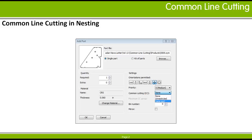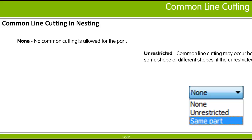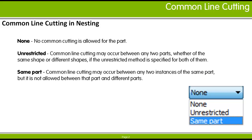The control will be set by default if the part's Common Cutting attribute is already set. For each part, the following choices are provided for the Common Cutting properties. None means the part will not be nested for Common Line Cutting. Unrestricted means Common Line Cutting can happen between any two parts, whether the parts are the same shape or not, if the unrestricted method is set for both of them. And the Same Part setting means Common Line Cutting can happen between any two instances of the same part, but not with any other part definition in the schedule.